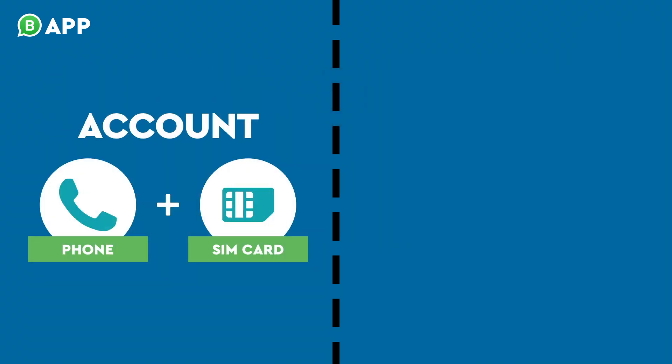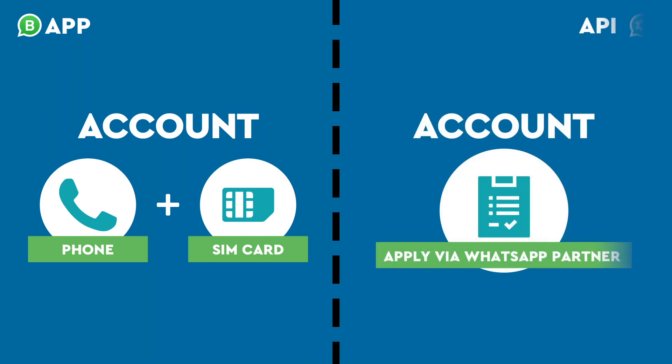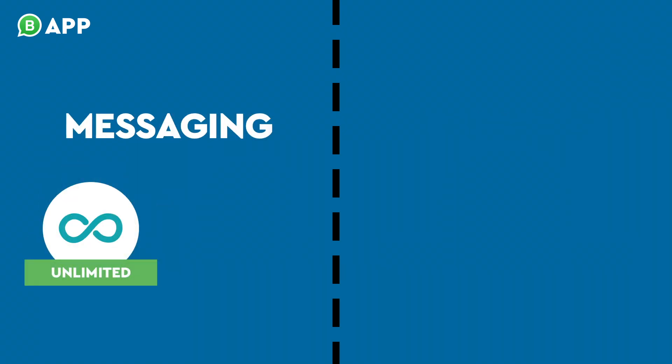Setting up an app account is simple — a phone and a SIM card is all you need to get started. Once you've downloaded the app, you can begin messaging. Setting up an API account requires approval from WhatsApp. Your company will need to submit information about your business for WhatsApp to review, and this application will take a few business days to process.